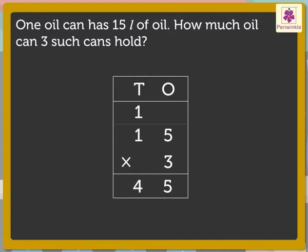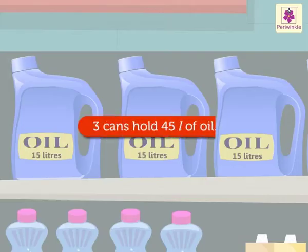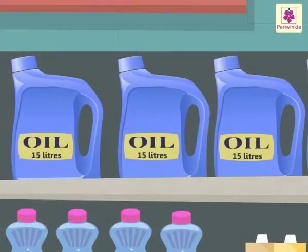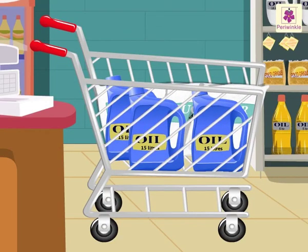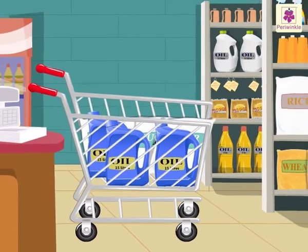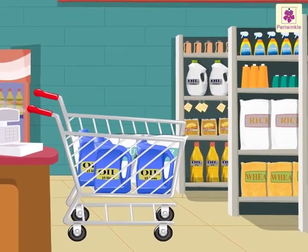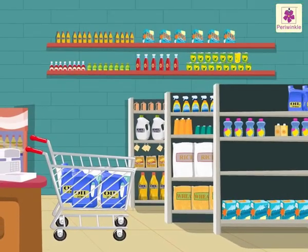Great friends, we found the answer. Three cans will have 45 liters of oil. Time to buy them. It was exciting to shop and at the same time solve multiplication stories of measurement.